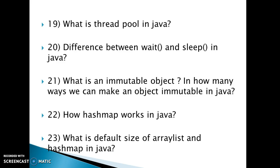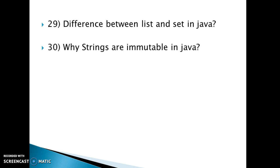The nineteenth question is: what is a thread pool in Java? The twentieth question is: what is an immutable object and in how many ways can we make an object immutable? Twenty-first: how does HashMap work in Java. Twenty-second: what is the default size of ArrayList and HashMap. And rounding out the list, the twenty-ninth question is difference between List and Set in Java, and the thirtieth is: why are strings immutable in Java? These are the 30 important interview questions for freshers as well as experienced candidates.